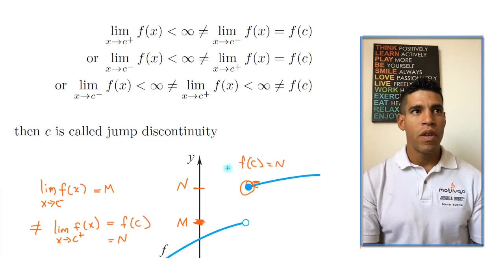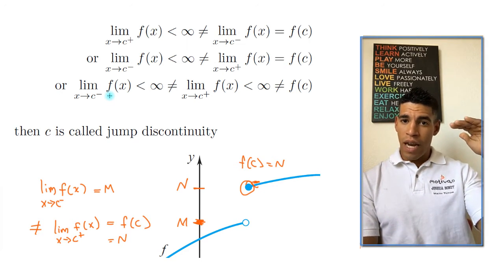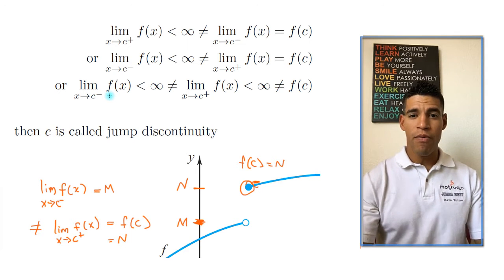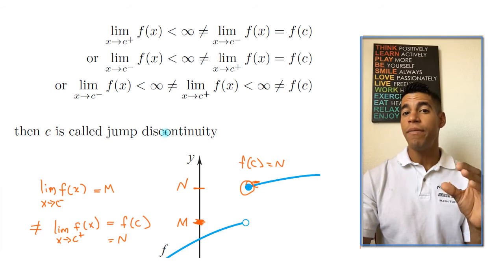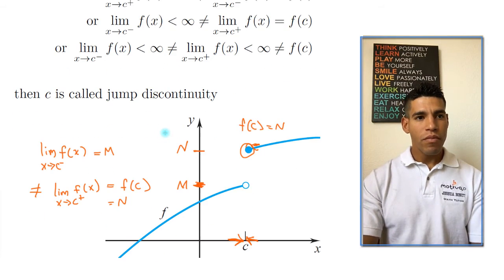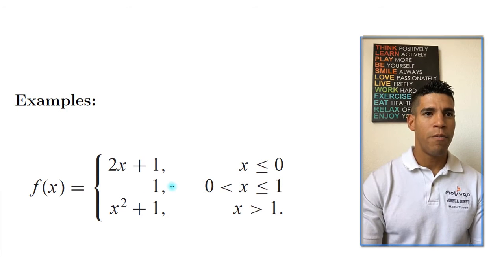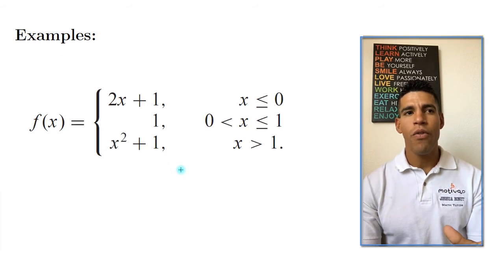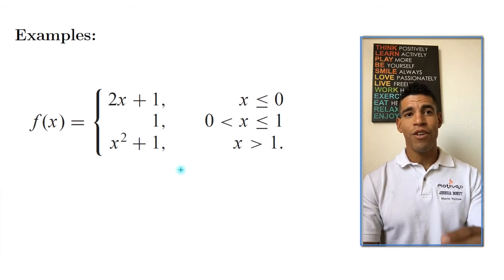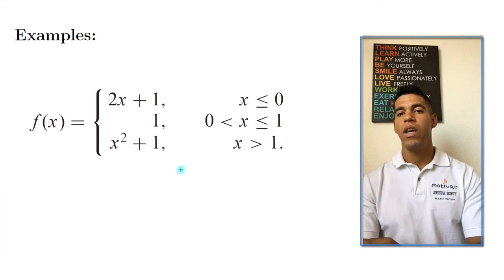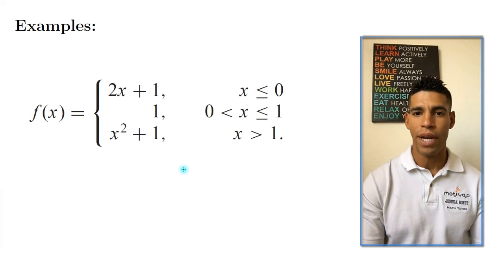The third condition is when all of them are different: the limit from the left is not equal to the limit from the right, which is not equal to f(c), and both limits are finite — they just aren't equal to each other. Now let me give you another example with a piecewise function. Just by looking at it, where do you think we're going to have a discontinuity? It's either at zero or at one.